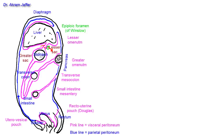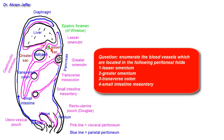Otherwise, in order to access the lesser sac you have to either incise the lesser omentum, or incise the part of the greater omentum between the greater curvature of the stomach and the transverse colon — called the gastrocolic omentum — or incise the transverse mesocolon between the transverse colon and the pancreas. Keep in mind that all these peritoneal folds are vascular folds and so they contain blood vessels.